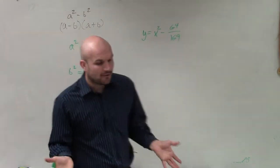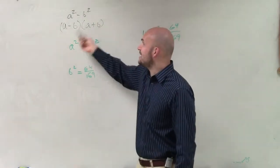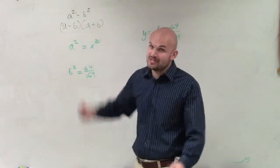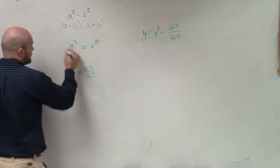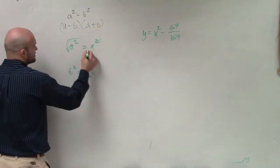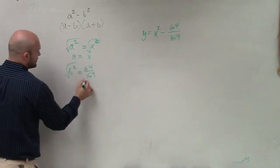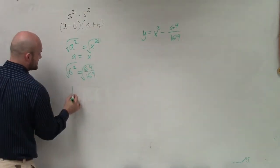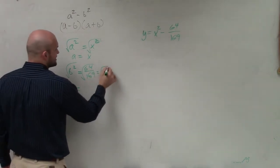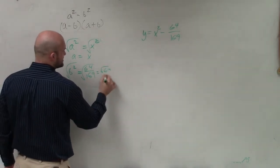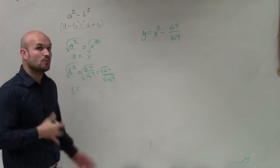So now what we need to do is determine our a and our b, because notice the factored form is a minus b times a plus b. We need to determine what a and b will be. So I take the square root, and I see a equals x. Then I take the square root here, and b equals — remember, when you take the square root of a fraction, that's the same as the square root of 64 over the square root of 169.